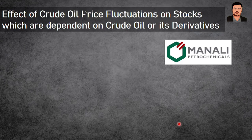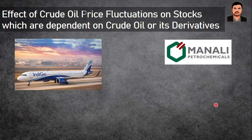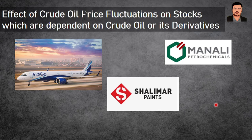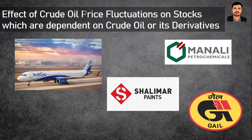Specific stocks impacted by crude oil price fluctuations include: Manali Petrochemicals, which uses crude oil as a raw material; IndiGo, which requires aviation turbine fuel (ATF); Shalimar Paints and other paint companies for whom crude oil is a raw material; and Gail for natural gas. When crude oil prices increase, these companies may be unable to pass on the price increase to consumers without reducing demand. If they absorb the increase, their profit margins are severely impacted. When crude oil prices decrease, these companies enjoy good margins.